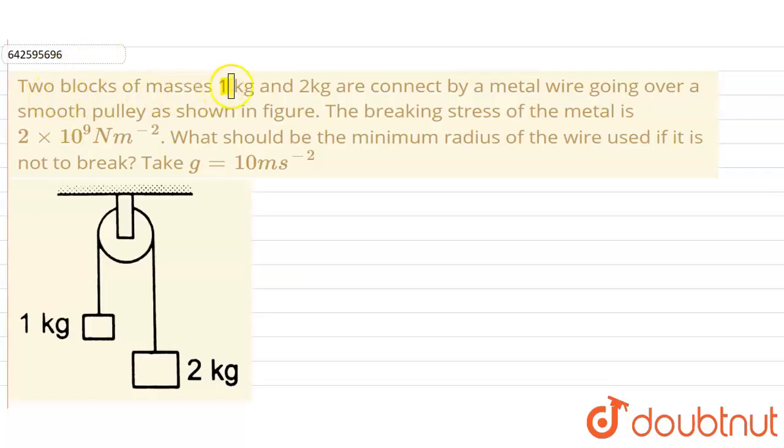Two blocks of masses 1 kg and 2 kg are connected by a metal wire going over a smooth pulley as shown in the figure. The breaking stress of the metal is 2 × 10^9 N/m². What should be the minimum radius of the wire used if it is not to break? Take g = 10 m/s².